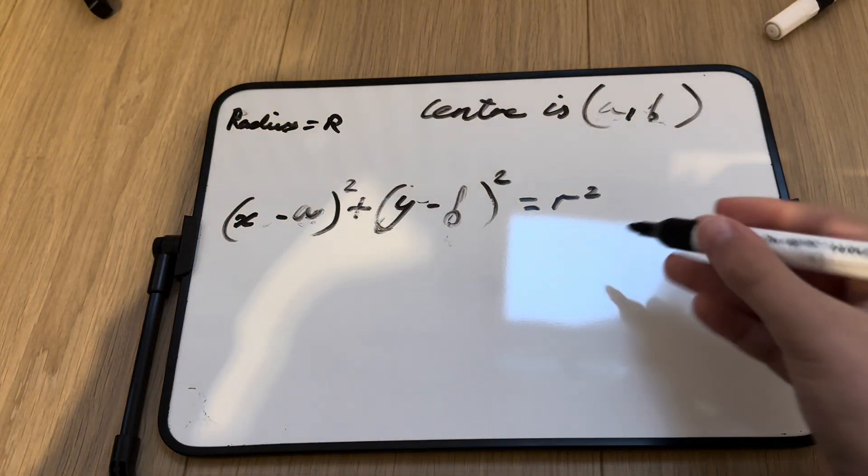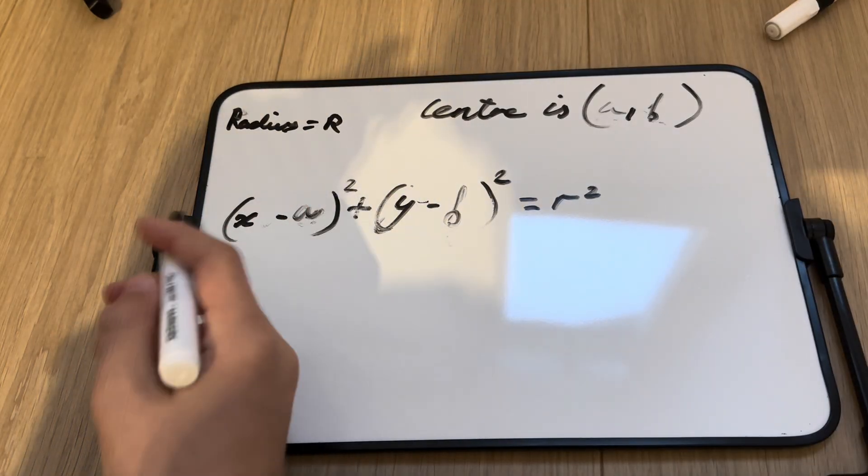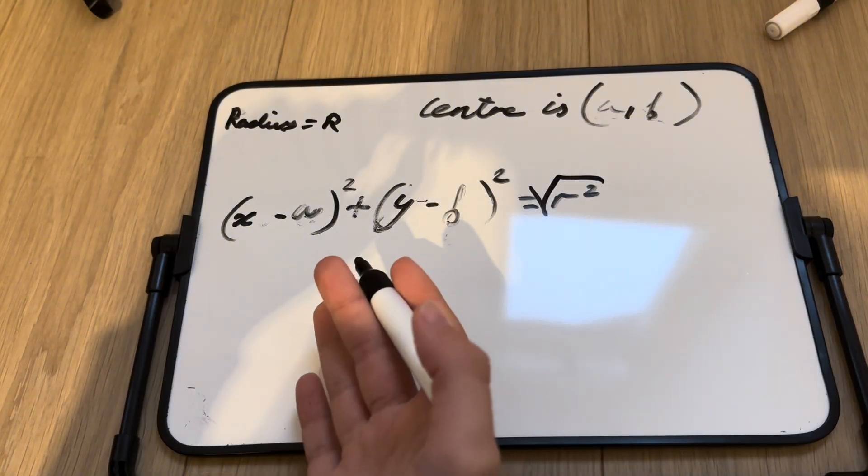What this means is that if we want to find a radius, we can, once we've solved this, we can just square root this side and we know the radius of the circle.